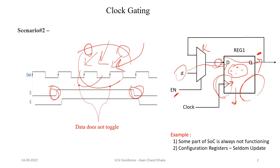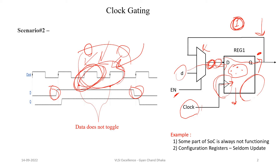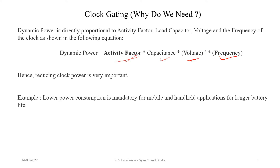In the previous chapter, we derived that dynamic power is the product of activity factor, load capacitance, supply voltage, and the frequency at which the circuit is operating. So if we can somehow remove these extra clock cycles, the activity of this flip-flop is going to be reduced. If we are sampling data at every clock cycle, our activity factor is going to be 1. If we do not process the input data at every clock cycle, our activity of this circuit is going to be less. So in order to make the activity less when the circuit behavior is going to be the same, we can remove these extra clock cycles. This is the motivation behind developing clock gating circuits — to reduce the activity factor of a circuit.